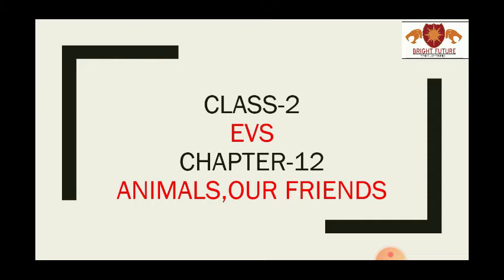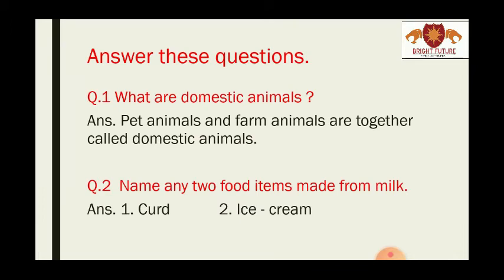So now let's start our question answer. Our first question is: What are domestic animals? It means domestic animals kya hota hai? Answer is P-E-T Animals A-N-D F-A-R-M Animals are T-O-G-E-T-H-E-R together C-A-L-L-E-D called D-O-M-E-S-T-I-C Animals. Pet animals and farm animals are together called domestic animals.